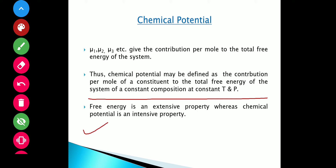One important distinction: free energy is an extensive property whereas chemical potential is an intensive property. In general, extensive properties vary with change in number of moles, and their partial derivatives give us partial molar properties, which are intensive properties. For example, free energy is extensive whereas chemical potential is intensive.